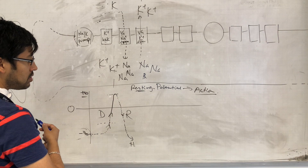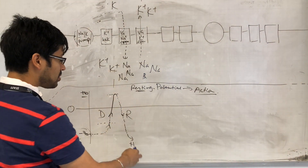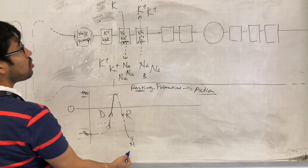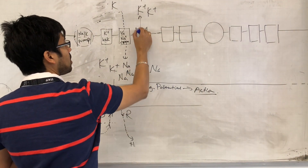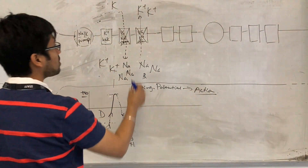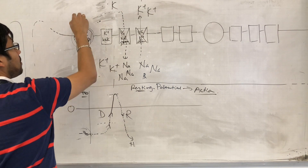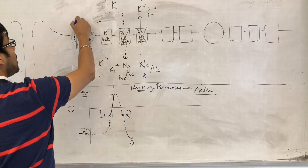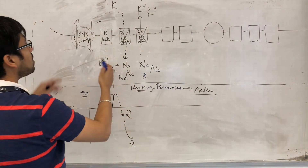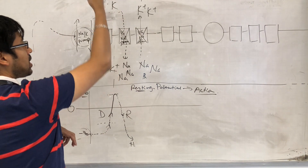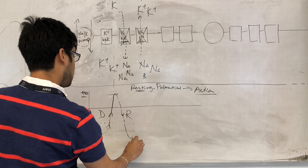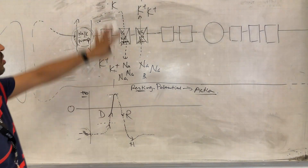Depolarization caused the events of repolarization. The repolarization kind of overshoots and causes hyperpolarization, going even more negative than minus 70. Once we hit hyperpolarization, the voltage-gated K+ channels close, the voltage-gated sodium channels close, and at this point the sodium-potassium pump — it's always working, but because all the other channels are now closed, its effects are more pronounced. The sodium-potassium pump continues to move K+ into the cell and pump sodium out, and by doing so it allows a return to the resting potential.